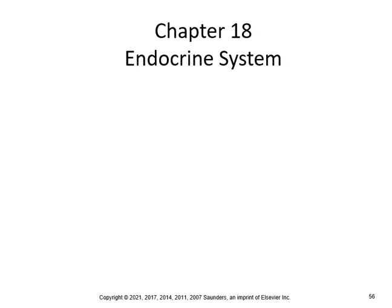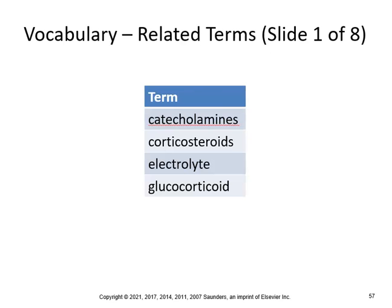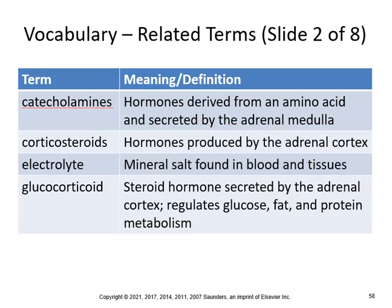We'll continue with part two of the endocrine system, basically chapter 18. We go into catecholamines, corticosteroids, electrolytes, and glucocorticoids.